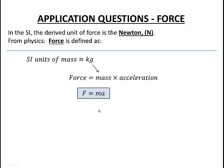Now the metric units of mass are kilograms, and the metric units of acceleration are meters per second squared. So when we put them together, our force units are going to be kilograms times meters per second squared.